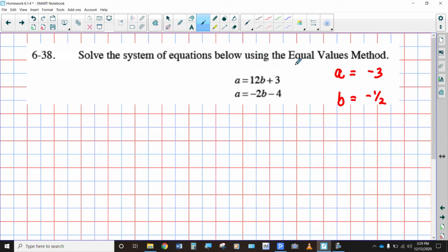Solve the system of equations using the equal values method. So remember, if A is equal to this, and A is equal to that, this must be equal to that. So once we've got this set up, we're going to solve for B, and once we know what B is, we can figure out what A is and verify that we get the same value for A in each of those equations. So I'm going to add 2 to each side, so it becomes 14B, and I'm going to take away 3 from each side, so it becomes negative 7.